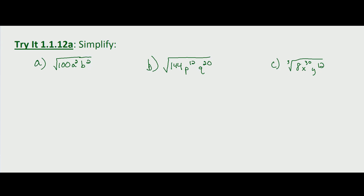For a square root, which is what the first two parts of this problem are, we want to look for perfect squares of each part of the product under the radical. a² and b² are straightforward. We know that 10 squared equals 100, so if we simplify this radical we're going to end up with 10 squared, a squared, and b squared.